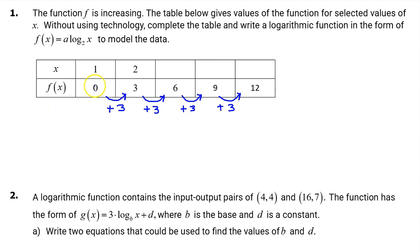For logarithmic functions, the output values will change additively while the input values change multiplicatively. Notice that the output values are increasing by 3 each time. We only have these two input values, but from 1 to 2 we are multiplying by 2. So we can bet that we will have that same multiplicative change for the other values. So 2 times 2 is 4, times 2 again is 8, times 2 one more time will be 16.